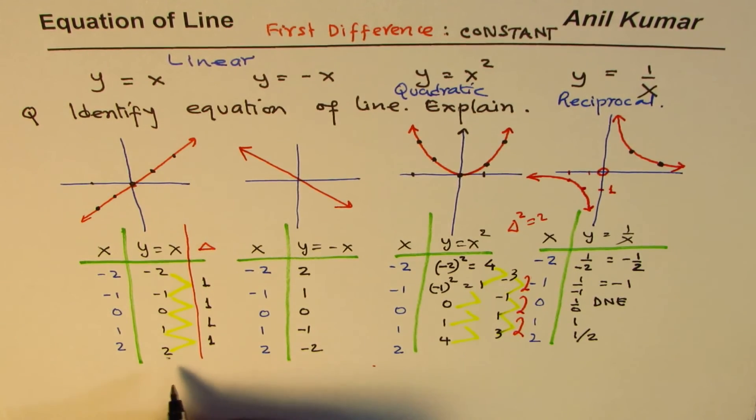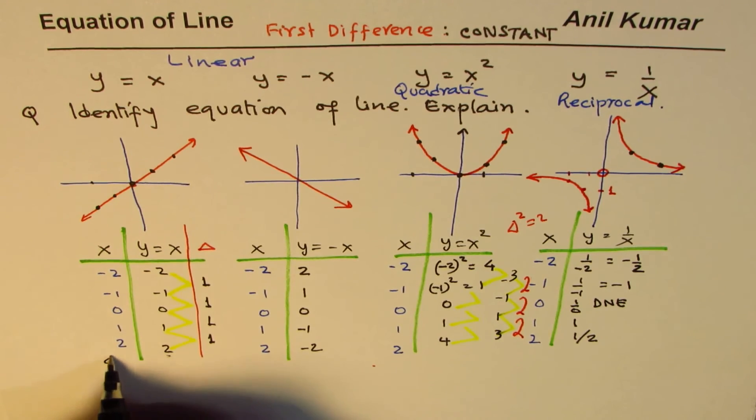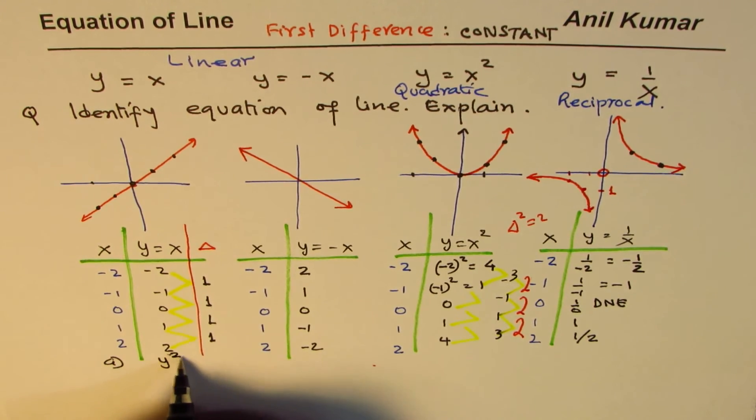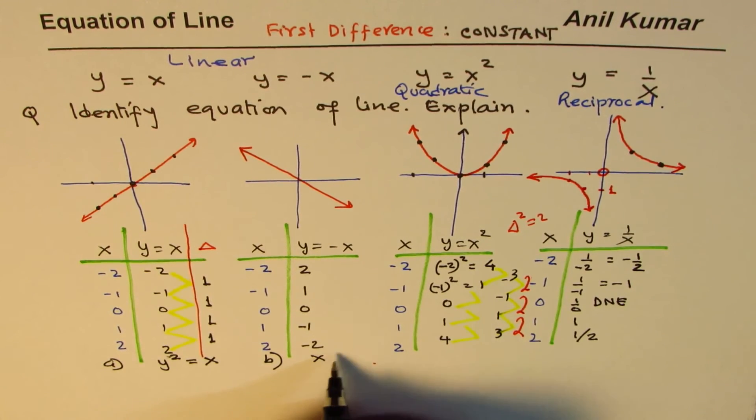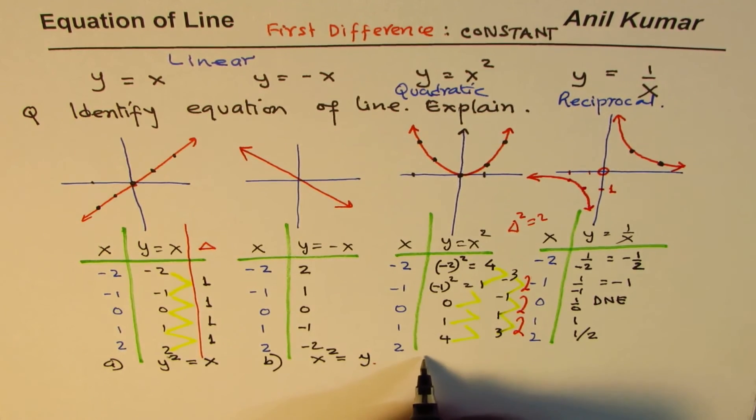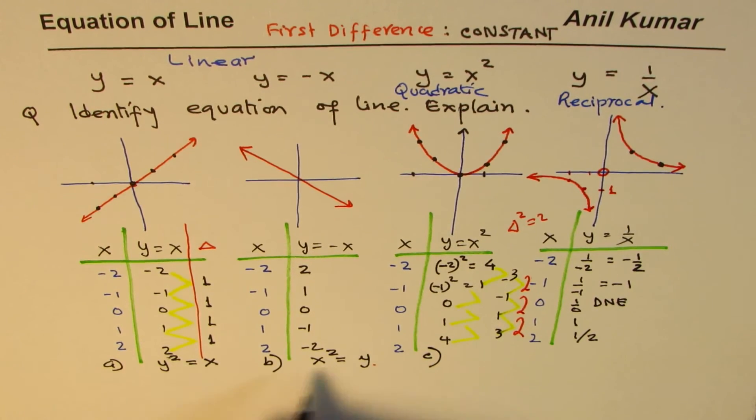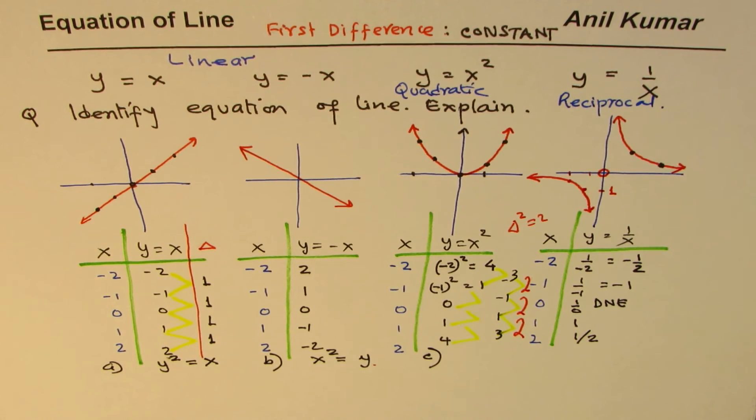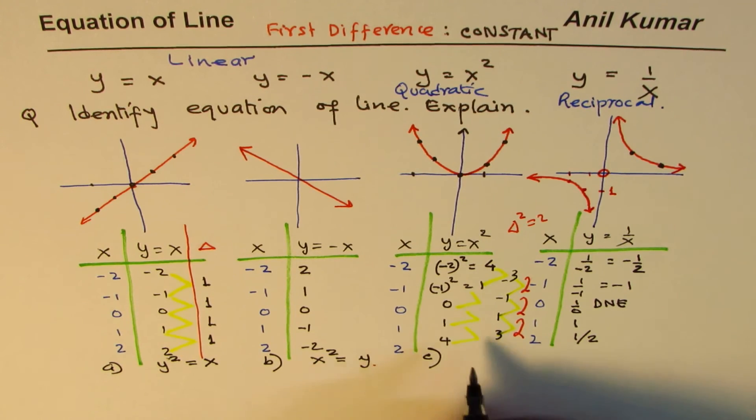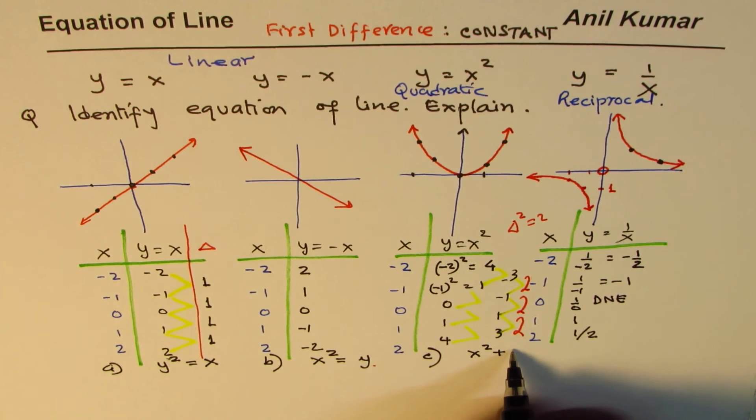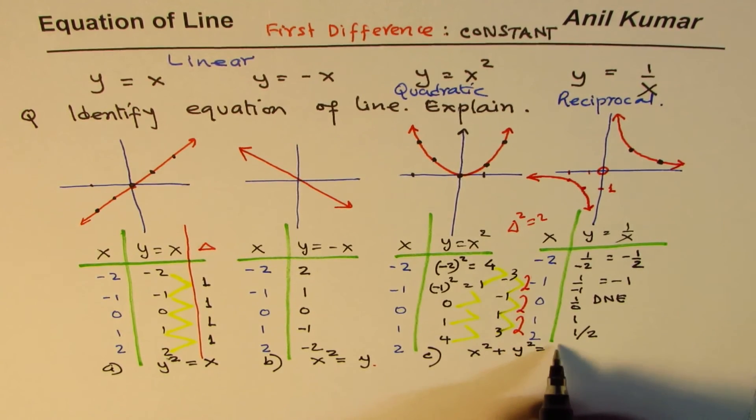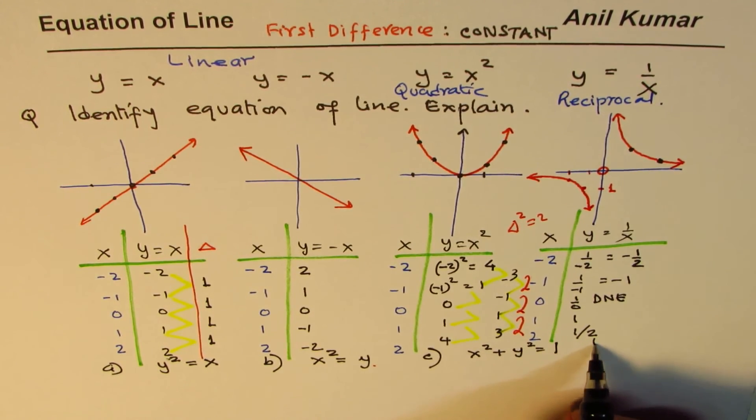So my options are A: Y squared equals X, option B: X squared equals, let's say, Y, option C... we are using Y squared terms. So that is what we are saying. And if I have Y squared terms or X squared terms, we could have X squared plus Y squared equals 1. Does it represent a line?